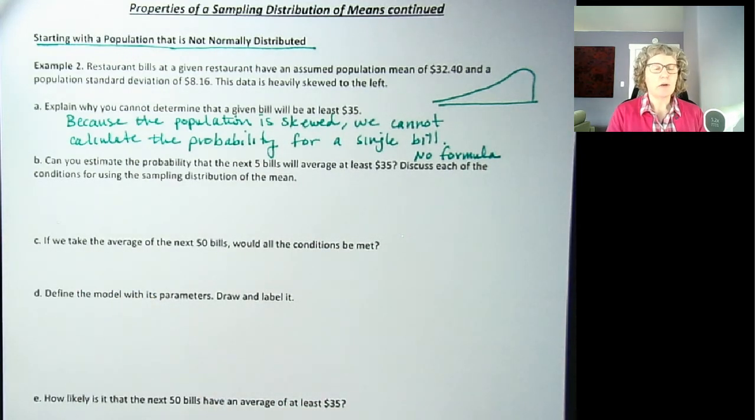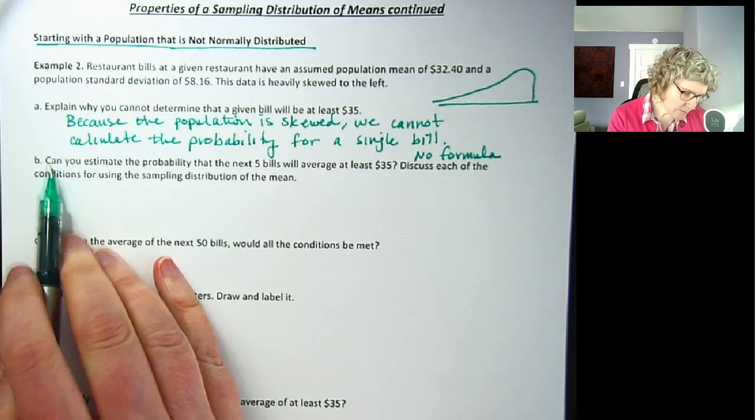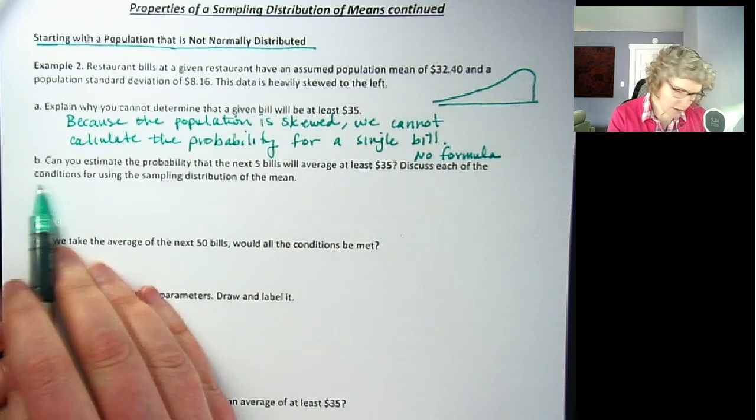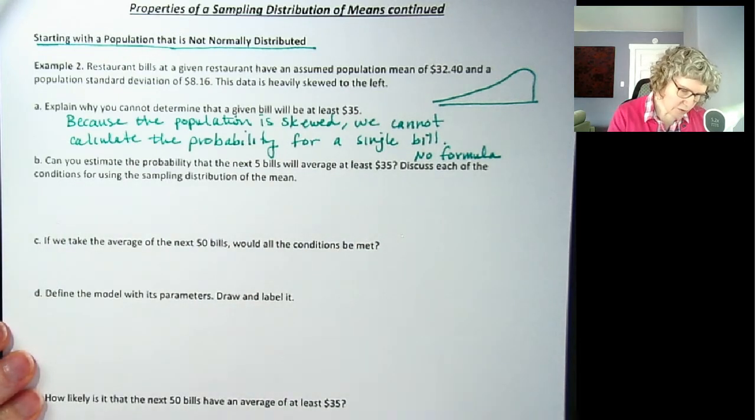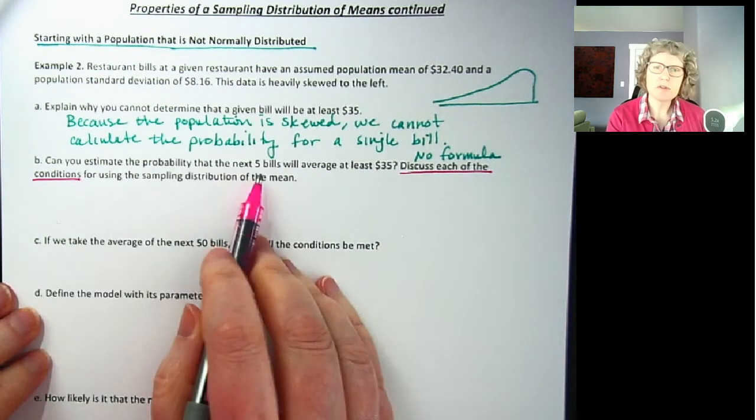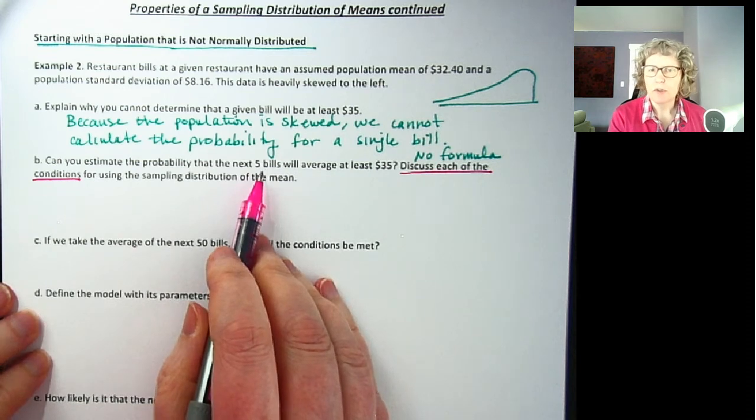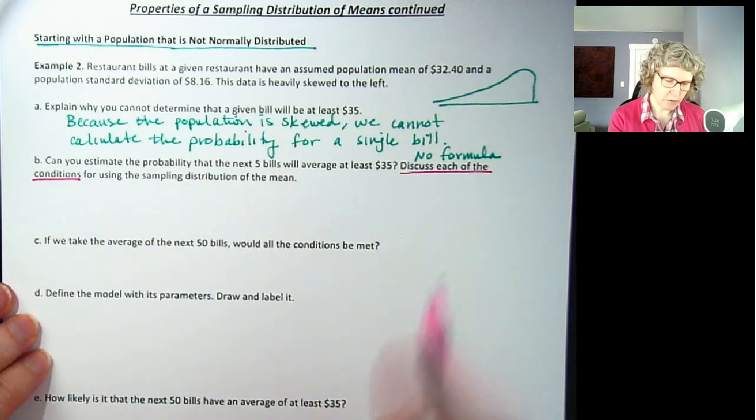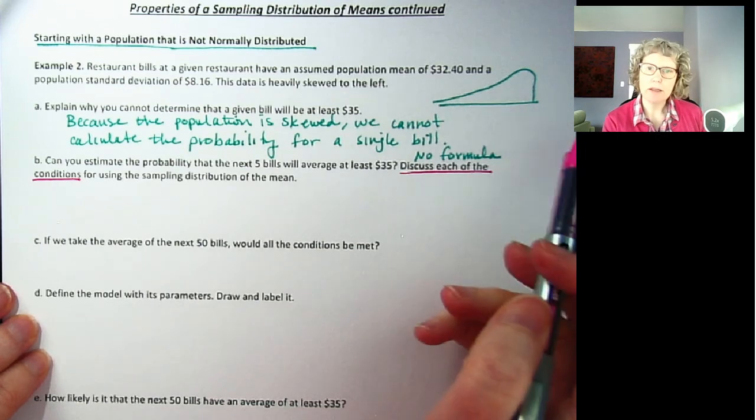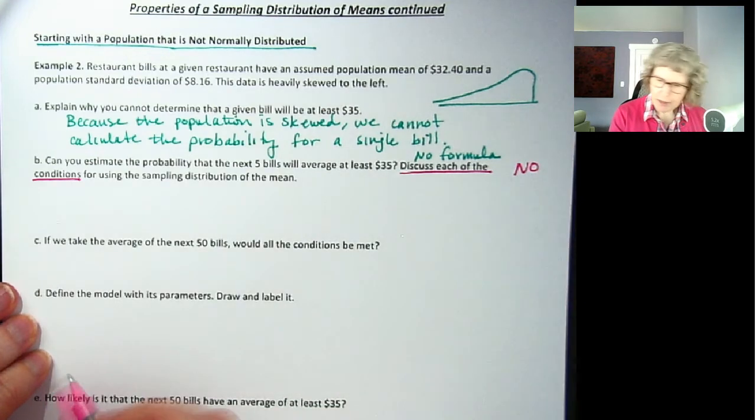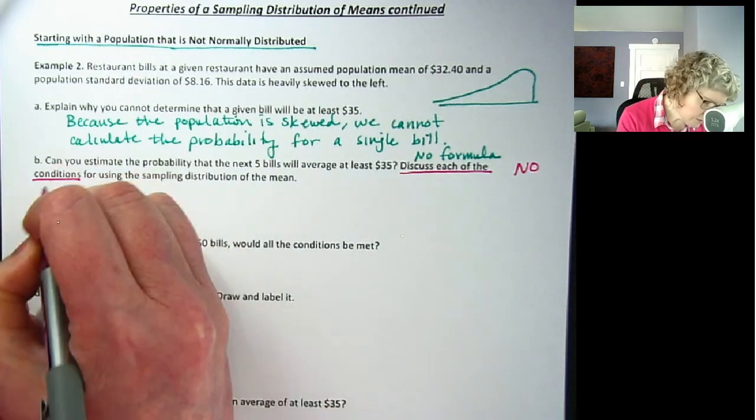But that's usually not what we want to do anyway. We usually want to take a sample and take an average. So here's the next question. Can you estimate the probability that the next five bills will average at least $35? Discuss each of the conditions for using the sampling distribution of the mean. So what's your first hit? Can we do it with five? What did we see on the simulation? When we started, ours was skewed to the right, but five was not enough, right?